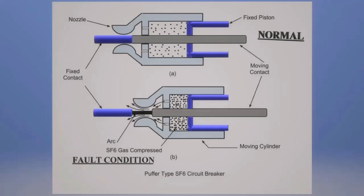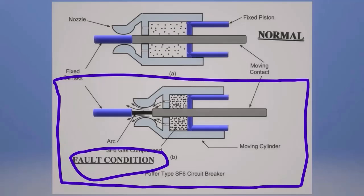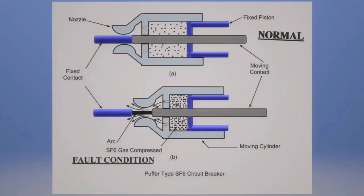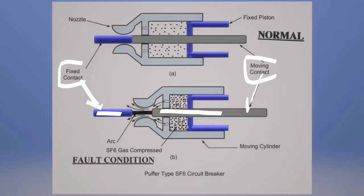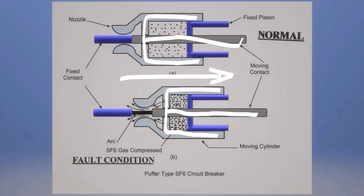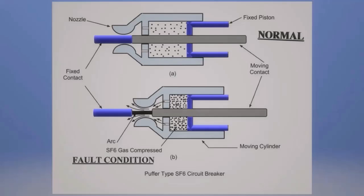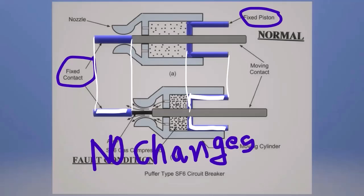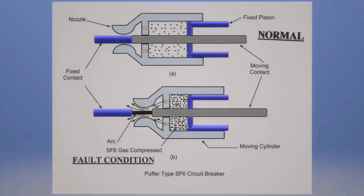This is the abnormal working condition. The fixed contact and moving contact is divided. The fixed contact and moving contact creates the arc. The moving cylinder and moving contact is moved. The fixed contact and fixed position are used to move, and the moving cylinder and moving contact moves in that direction.